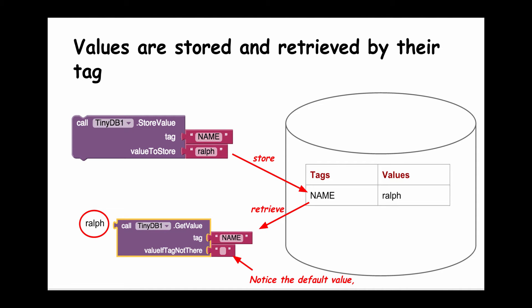Let's look at an example. Over on the right here, we've got a picture of a database. These are App Inventor blocks that are used to store data in the database and retrieve data from the database. If I want to store the name Ralph, this is the value I'm storing.